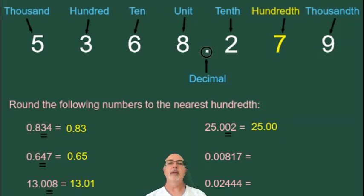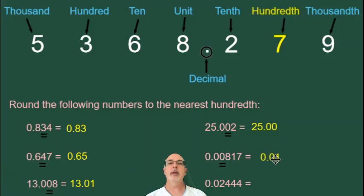Now we have 0.00817. This 0 is in the hundredth position, and the number to the right of it is an 8, which is bigger than 4, so we're rounding up. Our answer is 0.01.